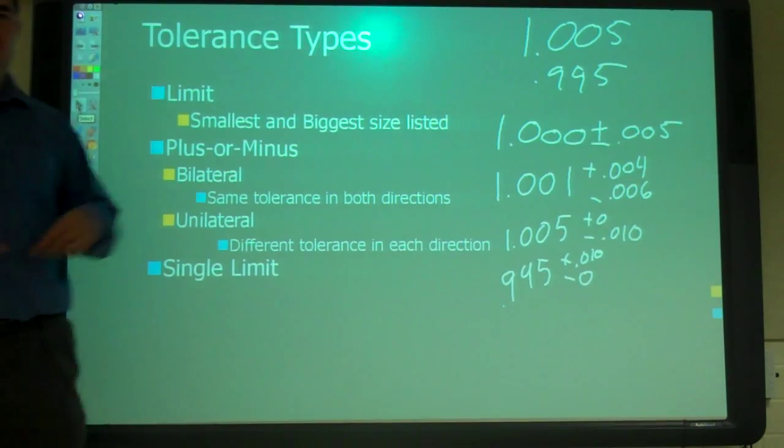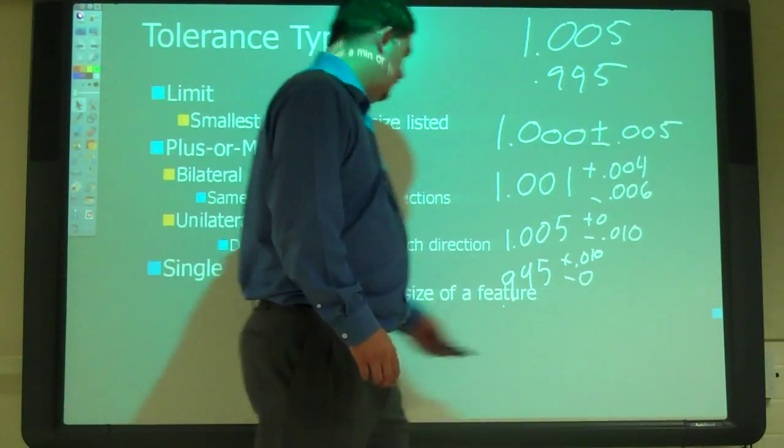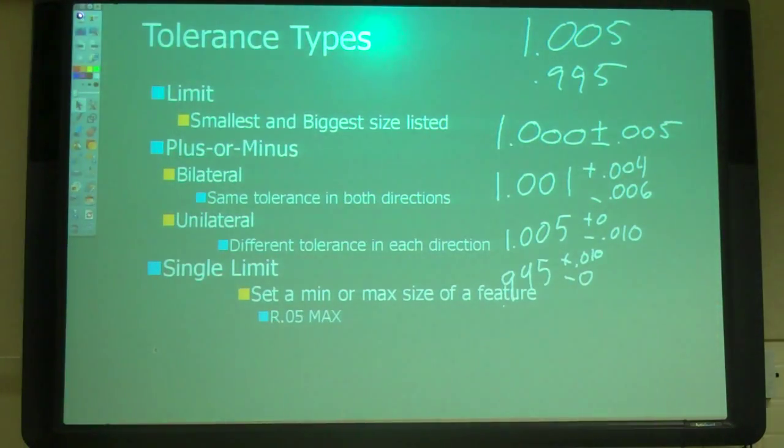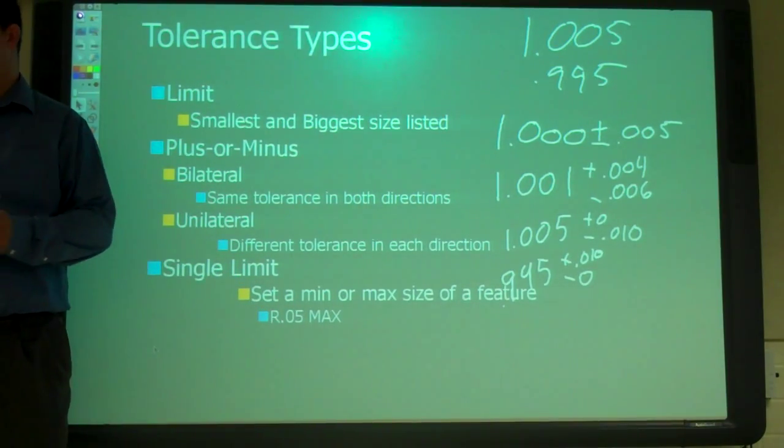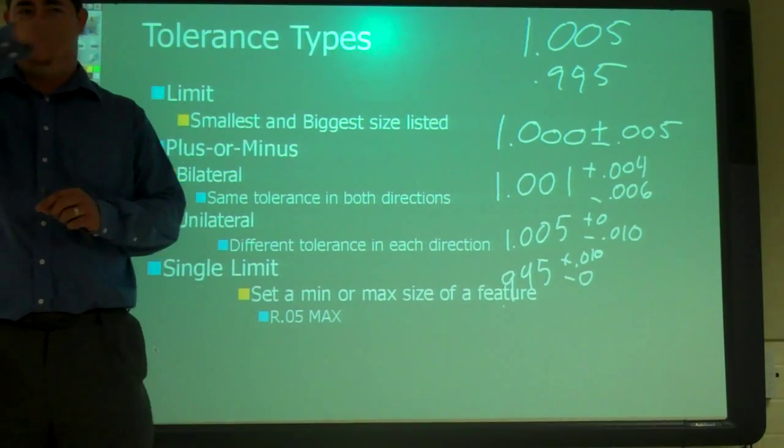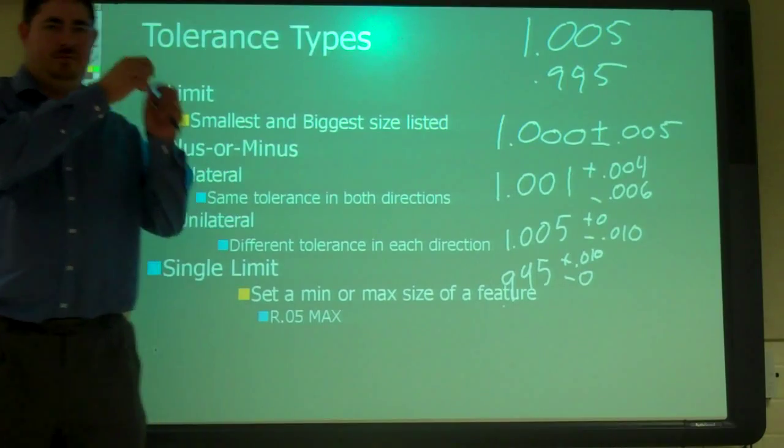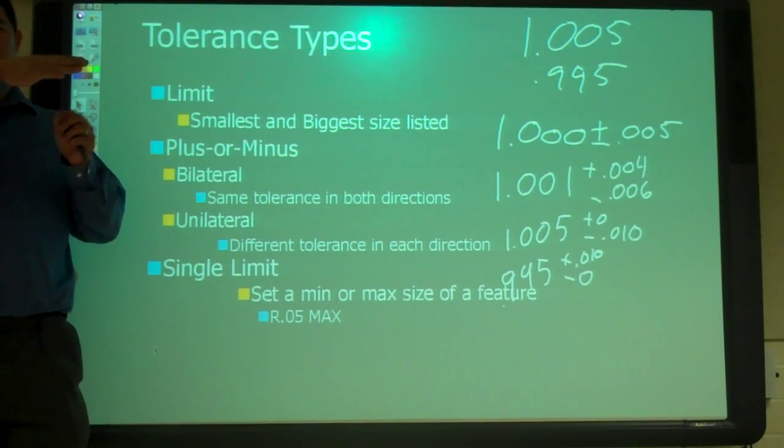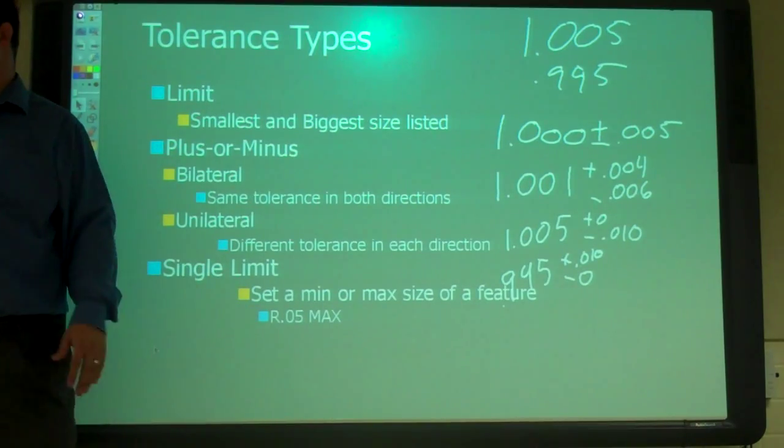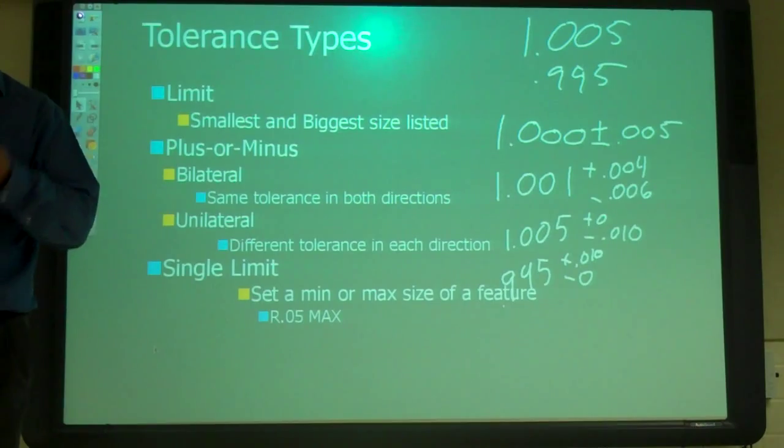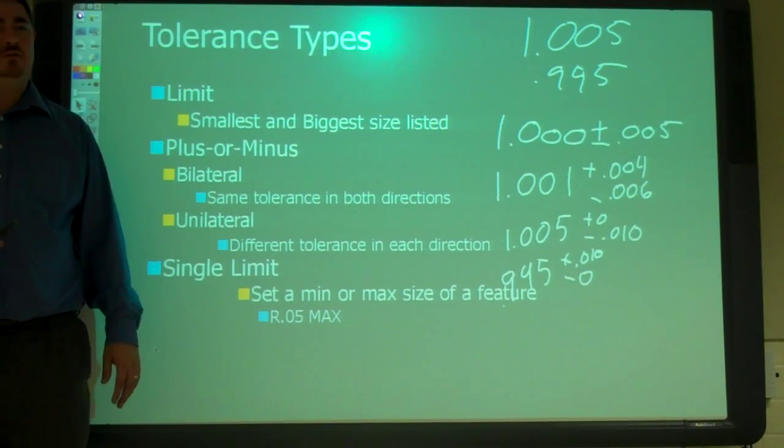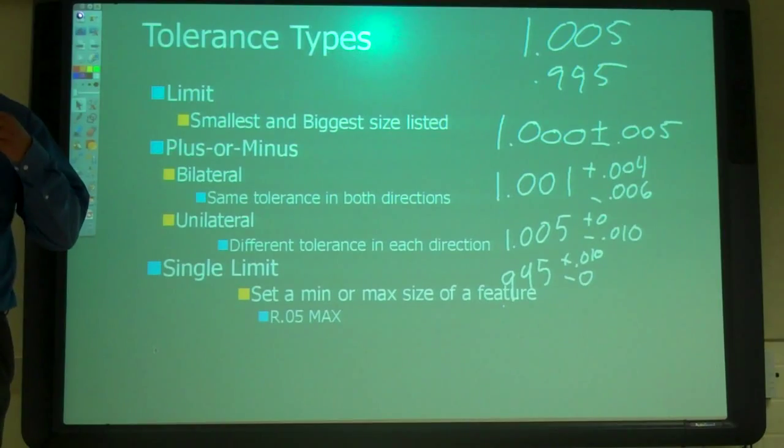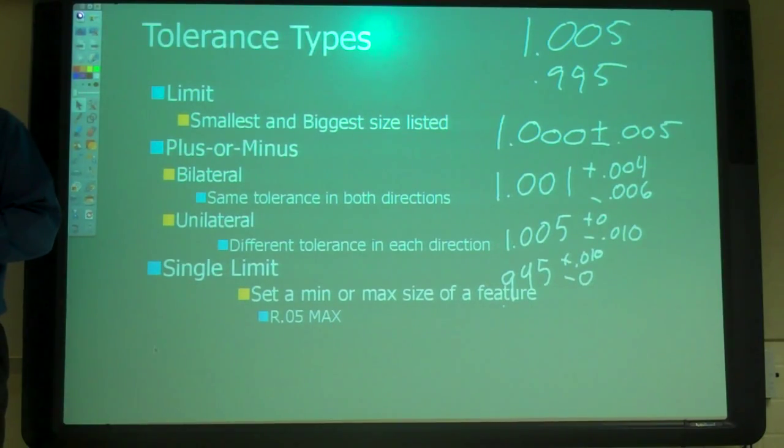And what do you think a single limit one is? Probably go one direction. Yeah, only one direction. So maybe like R.05 max. You don't care what it is as long as it's a maximum of this dimension. So if you're having them do some machining and you've got some fillets where you want them to make sure that there's a fillet there, but you don't want it to be a real big fillet, you can put that in. Or for the size of a weld, you want it to be a maximum of this or a minimum of this. So then you can put the max or the minimum number on it. So usually that's for fillets and stuff like small things like that, kind of finishing details.